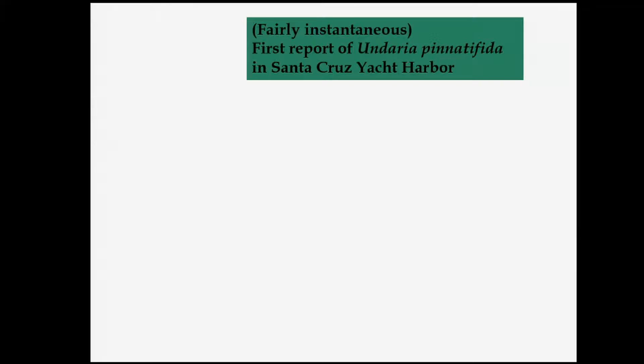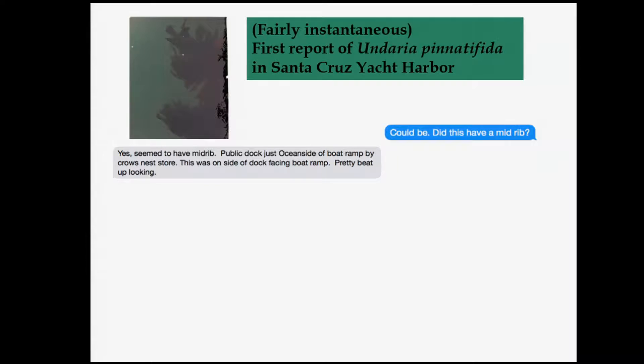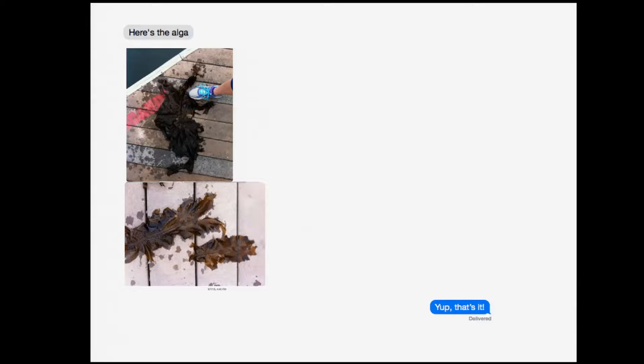We did get a new report that came in the form of a text — the first report of Undaria from the Santa Cruz Yacht Harbor. Undaria is known from Monterey and from Pillar Point and Half Moon Bay, but hadn't been reported from Santa Cruz. A friend sent me a photo asking 'is this it?' I asked if it had a midrib — a big identifier — she confirmed it did, told me where it was, and the following week sent more photos, which I confirmed. So that was the first text-based discovery of Undaria in a new location.